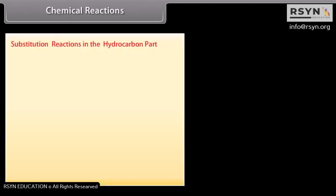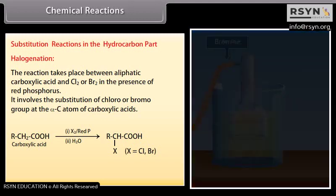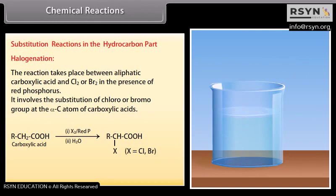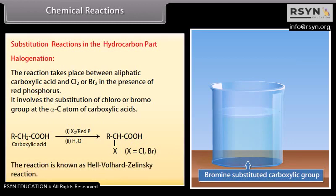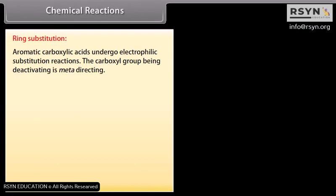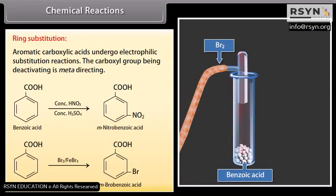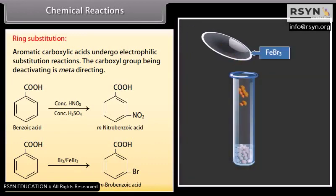Substitution reactions in the hydrocarbon part. Halogenation: the reaction takes place between aliphatic carboxylic acid and chlorine or bromine in the presence of red phosphorus. It involves the substitution of a chloro or bromo group at the alpha carbon atom of carboxylic acids, and is known as the Hell-Volhard-Zelinsky reaction. Ring substitution: aromatic carboxylic acids undergo electrophilic substitution reactions; the carboxyl group, being deactivating, is meta-directing. On adding concentrated nitric and sulfuric acid to benzoic acid, it is converted into meta-nitrobenzoic acid. On adding bromine and ferric bromide to benzoic acid, it is converted into meta-bromobenzoic acid.